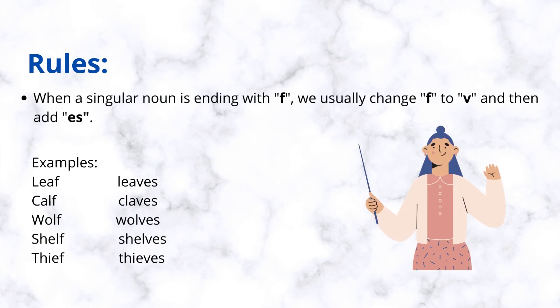When a singular noun is ending with f, we usually change f to v and then add es. Examples: leaf, leaves. Calf, calves. Wolf, wolves. Shelf, shelves. Thief, thieves.